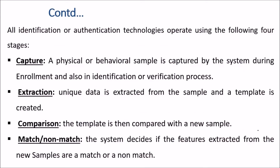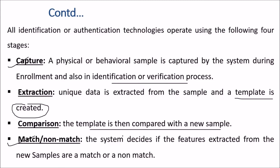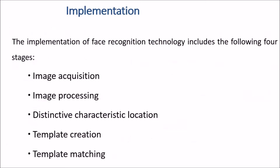All identification and authentication technologies operate using four stages. First, capture: a physical or behavioral sample is captured during enrollment and also during identification or verification. Second, extraction: unique data is extracted from the sample and a template is created — this is very important because good template creation enables the next stages. Third, comparison: the template is compared with the new sample. Fourth, matching: the system decides whether the features extracted from the new sample match or do not match.